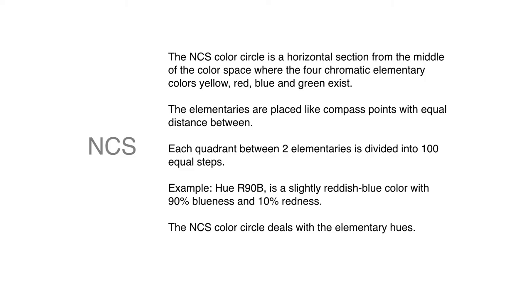Every quadrant between two elementaries is divided into 100 equal steps. So there has some similarity to the Munsell system, but they're not exactly the same thing. You can see that if you have 100 steps between elementary colors, you're going to have a lot more color opportunity than you will with the Munsell system. And it is a notation system, so it's red, 90, blue.